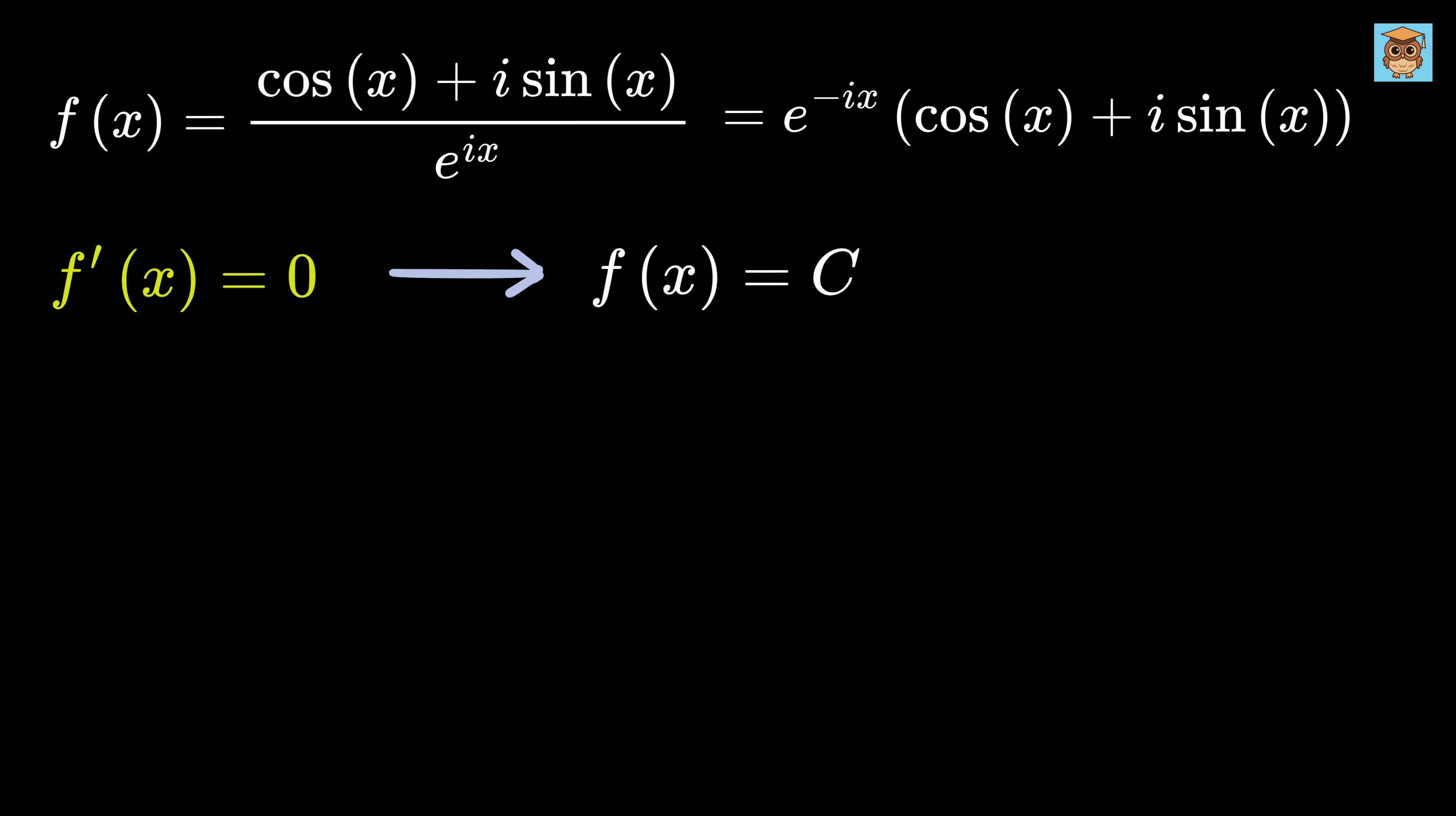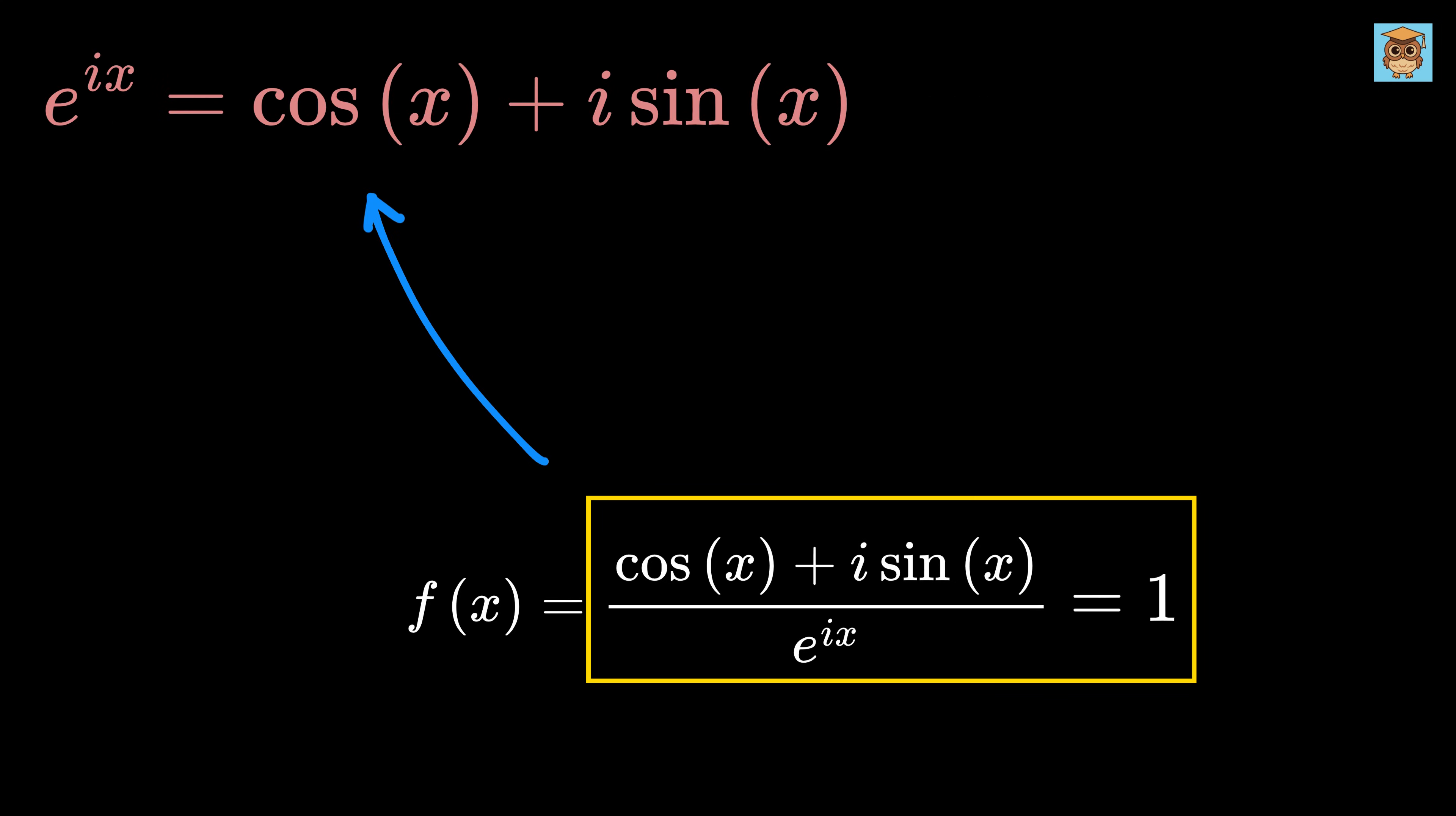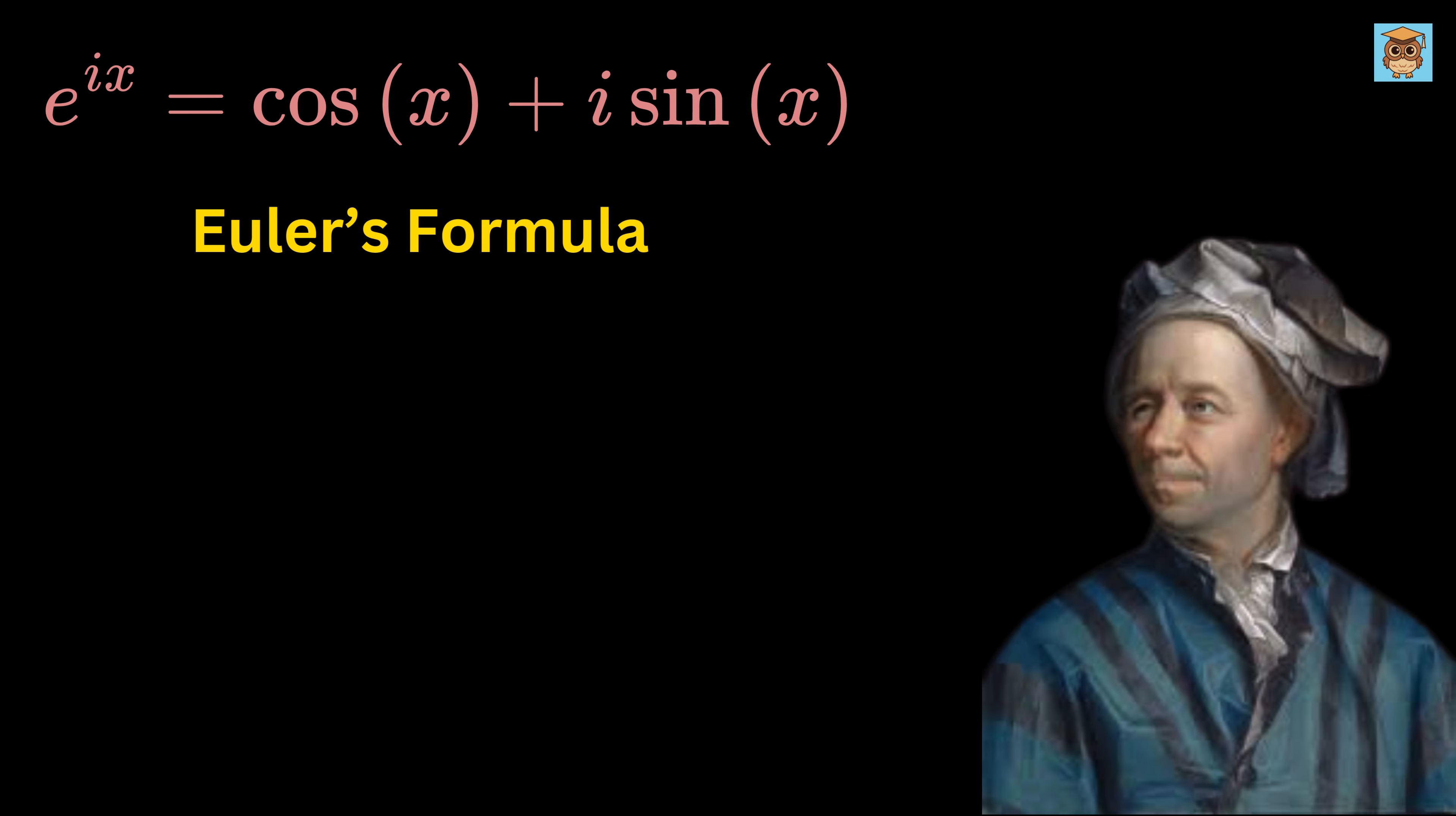Wow! Now, if we put x as 0, we get f(0) as this, which will be 1. And therefore, since f(x) is a constant, therefore f(x) equals 1, which means this ratio is 1 or e to the ix equals cos(x) plus i times sin(x), which is none other than Euler's formula.